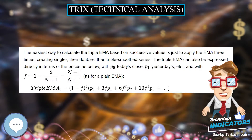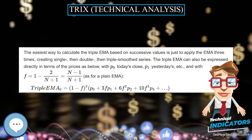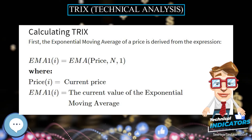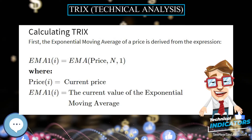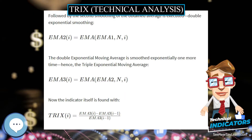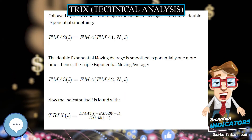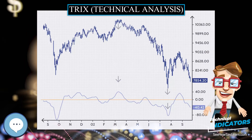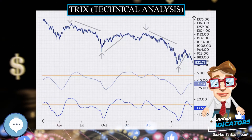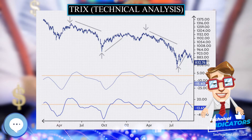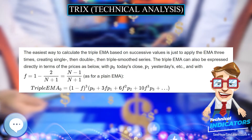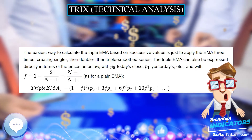The name TRIX comes from 'triple exponential.' TRIX is calculated with a given N-period. Like any moving average, the triple EMA is a smoothing of price data and is therefore trend-following. A rising or falling line indicates an uptrend or downtrend, and TRIX shows the slope of that line — positive for a steady uptrend, negative for a downtrend, and a crossing through zero signals a trend change, i.e., a peak or trough in the underlying average.